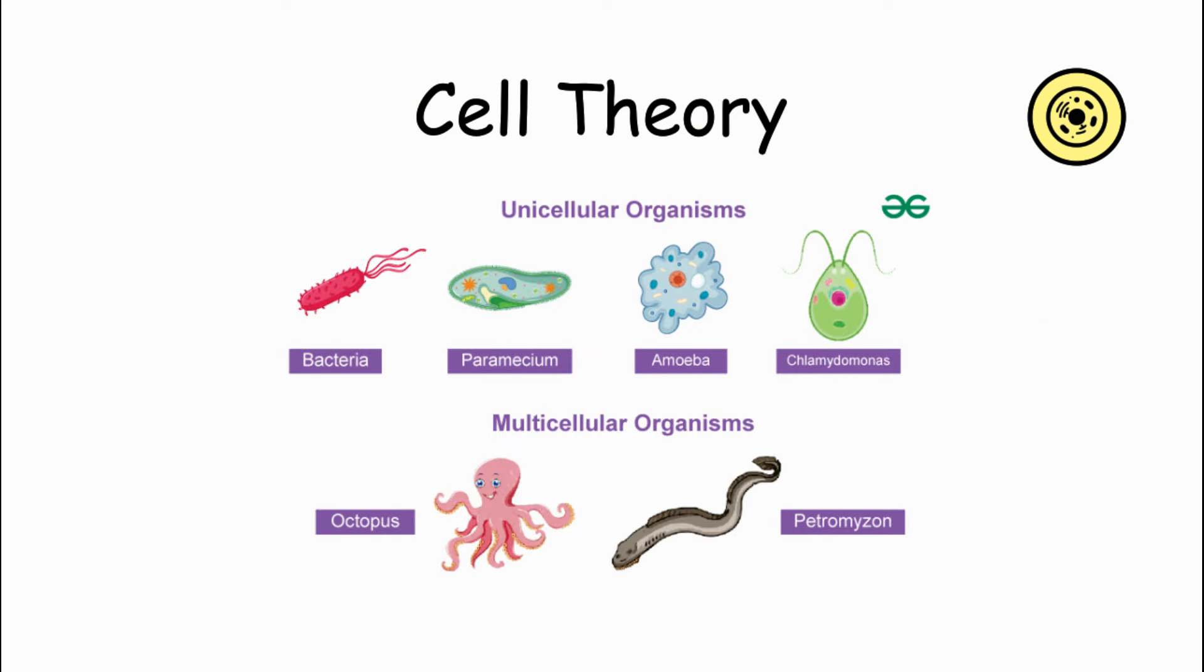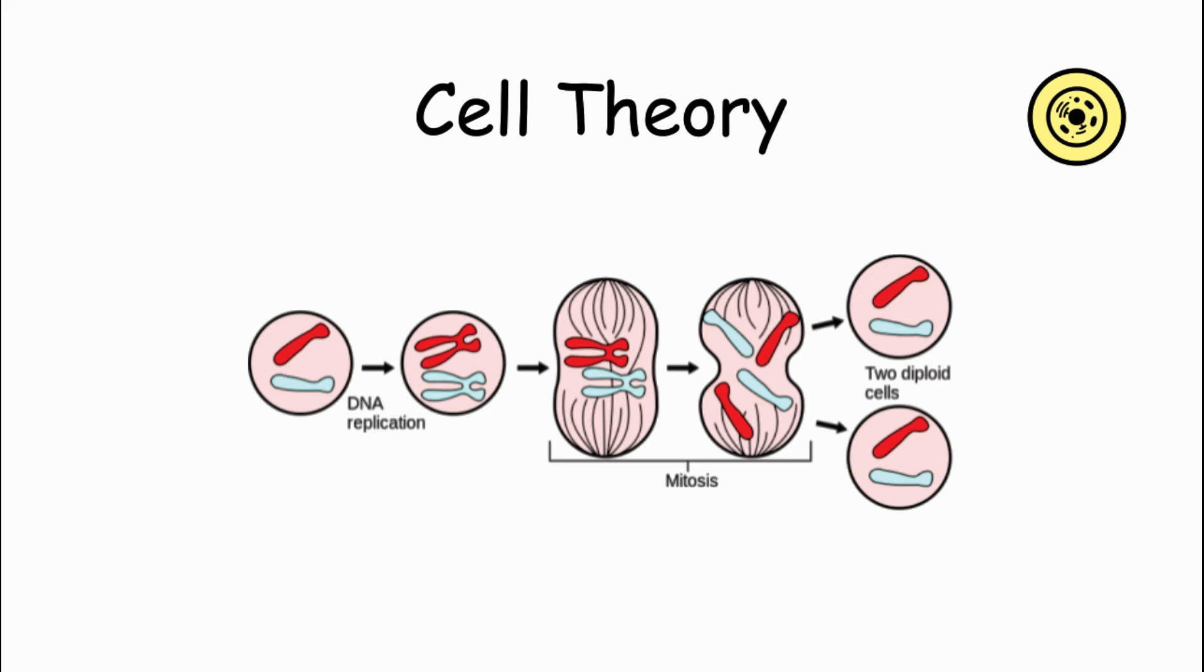Cells come in different sizes and shapes, and each one performs a specific function in a body. New cells and organisms are formed by the division of existing cells.